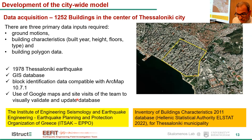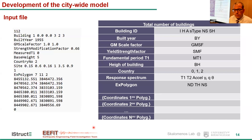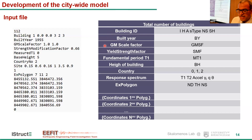This is how the input file looks in the U-Simulator platform. We can insert the total number of buildings automatically using a Python script, and every building has an ID with its information: construction year, a scale factor for the ground motion, the design characteristics, and the coordinates of the polygon.